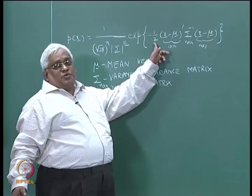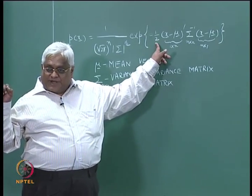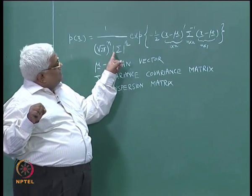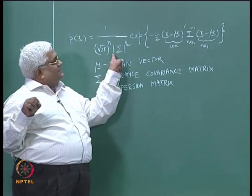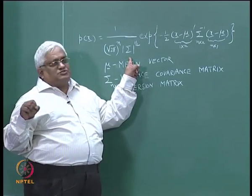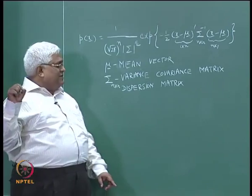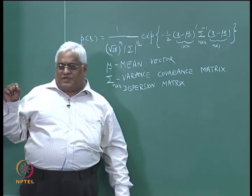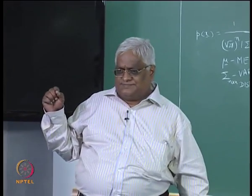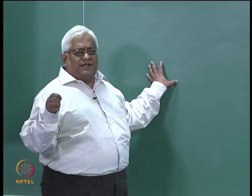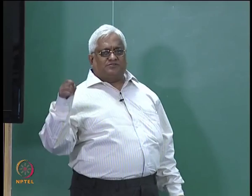I have already mentioned that the determinant of sigma has to be strictly greater than 0. Now, do you all understand the meaning of dispersion matrix, or variance-covariance matrix? I will explain what a dispersion matrix and variance-covariance matrix is. For this, you need to know the meaning of variance and the meaning of covariance.